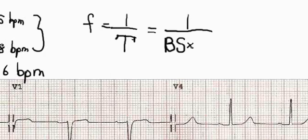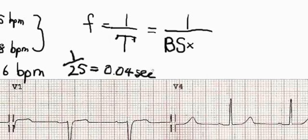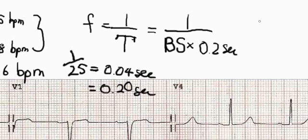When ECG machines were invented, it was decided that the paper or chart speed would be 25 millimeters per second. Each millimeter is therefore 1 divided by 25, which gives us 0.04 seconds per millimeter. A big square is 5 millimeters, so each big square equals 0.20 seconds. Substituting into the formula: frequency equals 1 over the number of big squares multiplied by 0.2 seconds. That gives us a frequency in beats per second, which is not what we want — we want beats per minute.